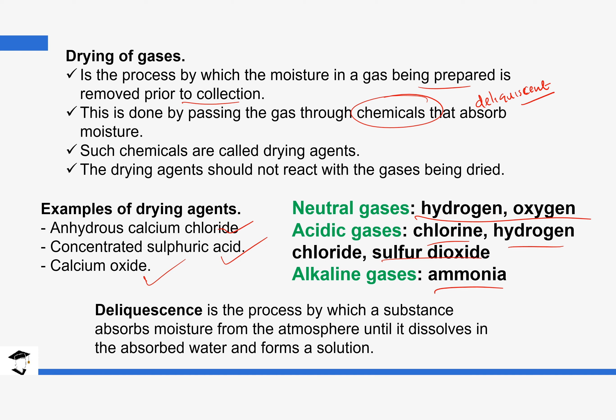So deliquescence, like we were discussing, is a process by which substances absorb moisture from the atmosphere and form a solution. These substances are deliquescent in nature. The anhydrous calcium chloride, the concentrated sulfuric acid, and the calcium oxide. So let's look at this with these drying agents in detail.